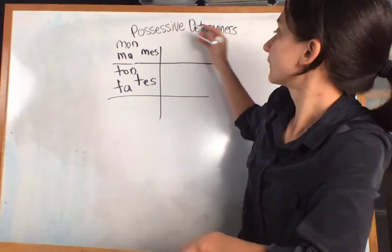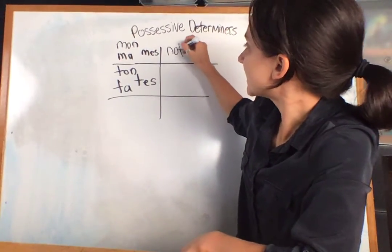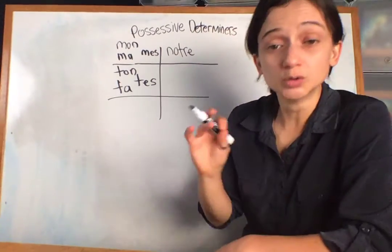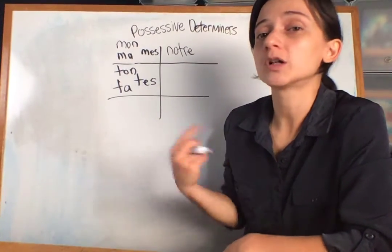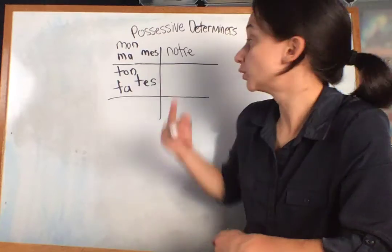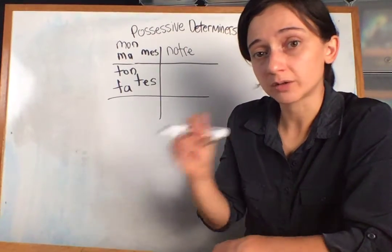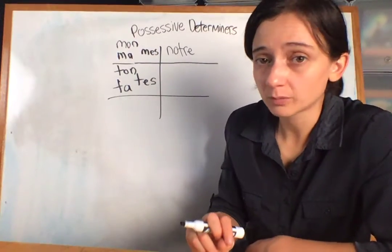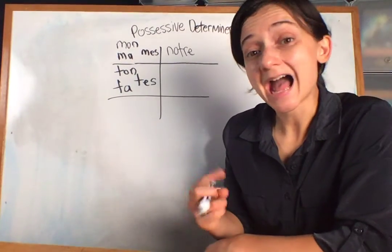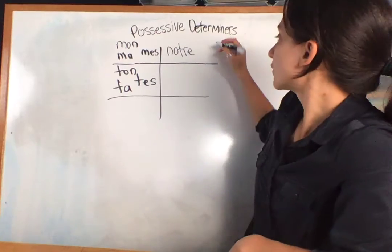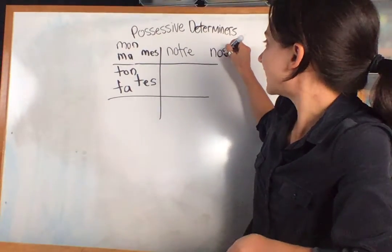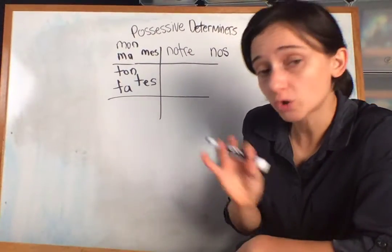I'm going to skip over here right now. Notre means our. So notre grand-mère, our grandmother. Notre grand-père, our grandfather. We don't need a masculine one or a feminine one. It's just our. But we do need a plural one. So if we were going to say our grandparents, we would use nos instead. Nos grands-parents.